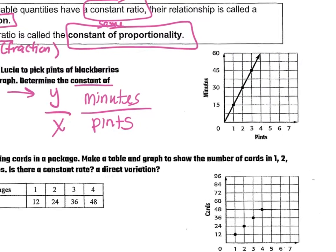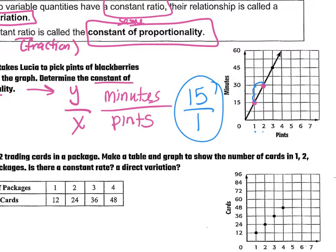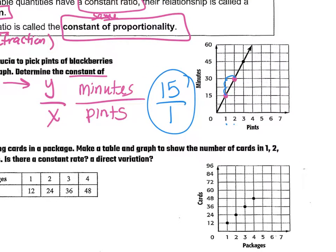Basically how many pints can we pick in so many minutes. They give us the points on there, and I would pick two points that are closest to each other so I don't have to reduce as much. So on that first one, the first two points, my change in y, I went from 15 to 30. Plus 15. 15 to 30 would be 15. Then my x change, I went from one pint to two pints. So that's just one. So 15 over one or 15. 15 minutes to pick one pint of blackberries is what that means.